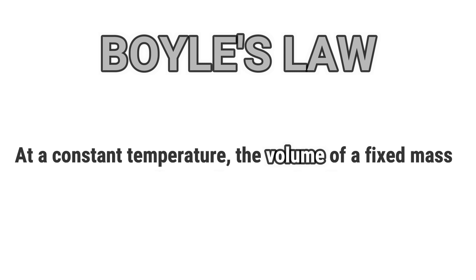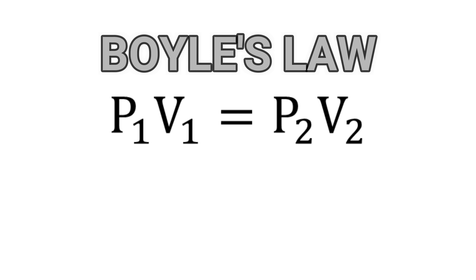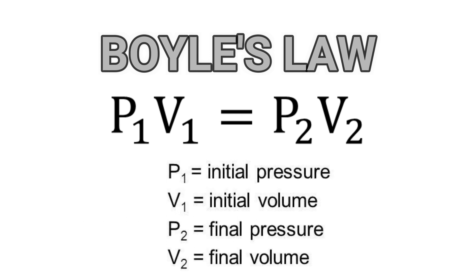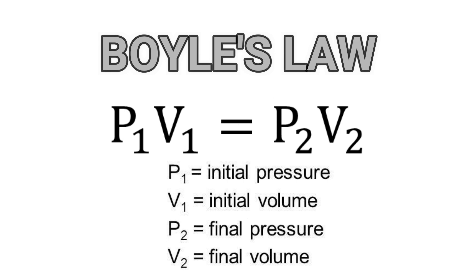The second assumption is that when the gas is perfect, it will obey Boyle's law. Boyle's law states that at a constant temperature, the volume of a fixed mass of an ideal gas is inversely proportional to its pressure. The formula of calculation related to Boyle's law is as follows. Pressure and volume can be in any unit as long as the unit is the same for both sides.